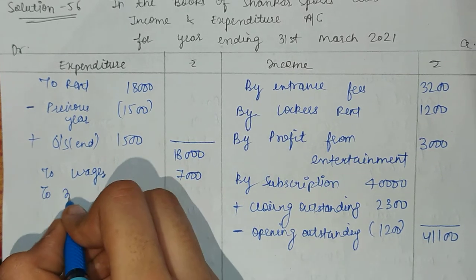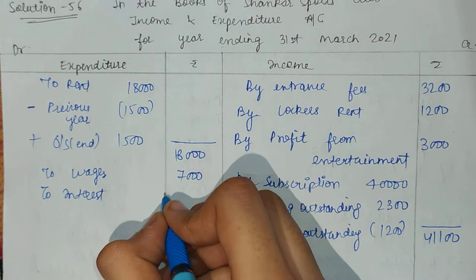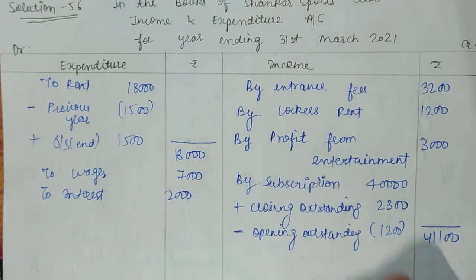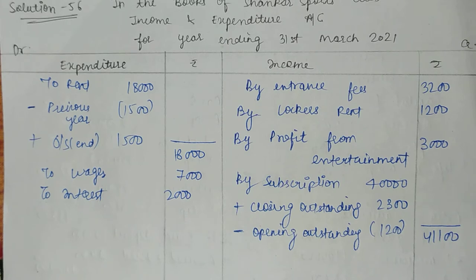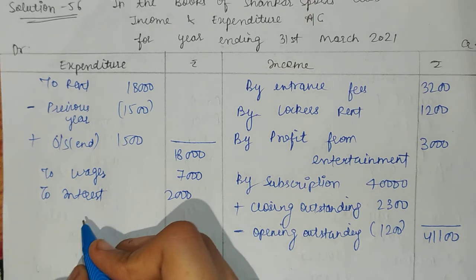Interest is $2,000. After that, postage is given. But be careful — you have opening and closing stock of postage stamps. This is cost of goods consumed related. The opening stock is used in the current year, so we add it. The closing stock will remain and be used next year, so we deduct it. That is the situation — add opening stock and deduct closing stock to arrive at the consumed amount.